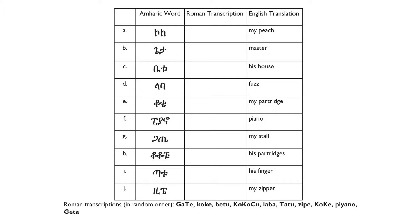Now we have this table. In the second column, we're given the words or phrases written in Amharic. They're called GS scripts. Our job is to match those scripts with their Roman transcriptions put in random order below the table. There are distinctions between capital letters and small ones in the transcriptions. The capital letters, including big G, big T, big K, and big C, represent special pronunciations in Amharic. For convenience, in this video I'll be using the same pronunciation for both the big letter and the small letter.